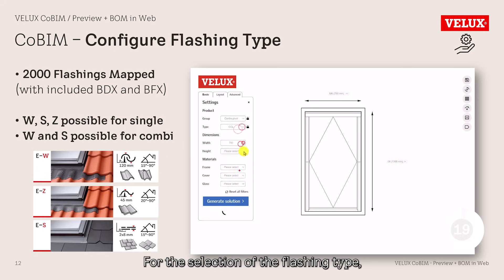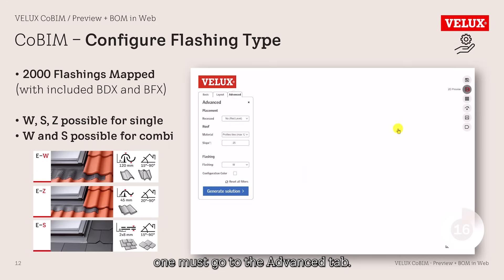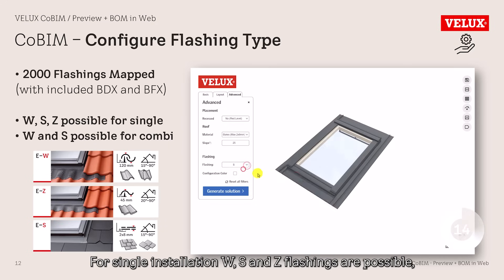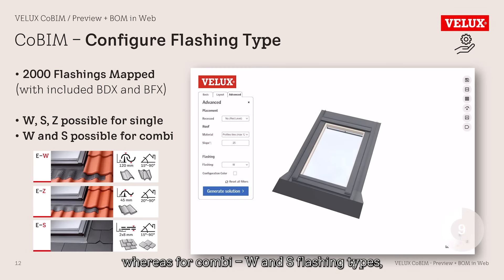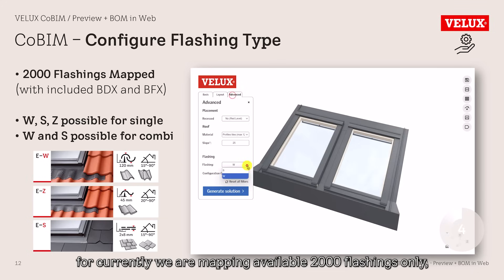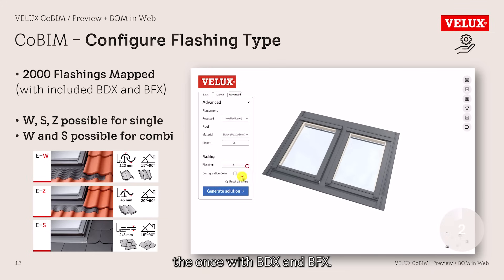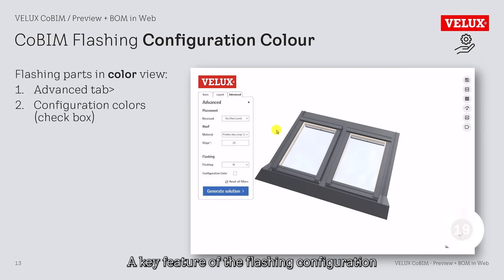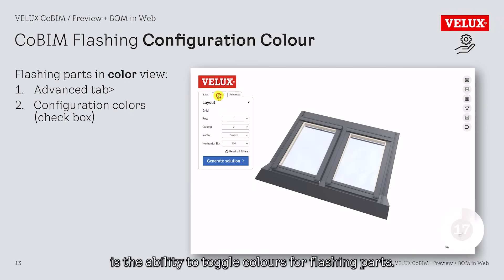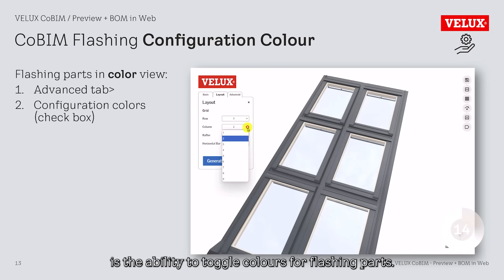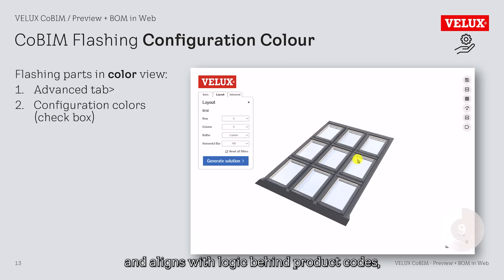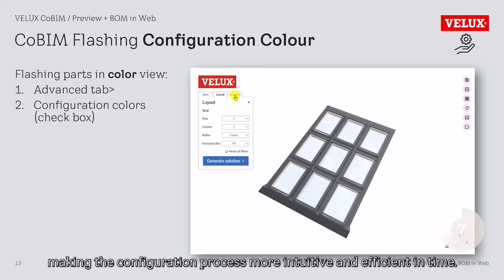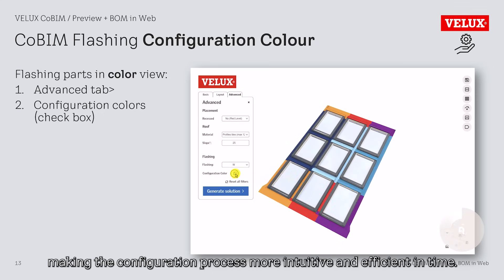For the selection of the flashing type, one must go to the advanced tab. For single installation, W, S, and Z flashings are possible, whereas for combi, W and S flashing types. Currently, we are mapping available 2,000 flashings only — the ones with BDX and BFX. A key feature of the flashing configuration is the ability to toggle colors for flashing parts. This helps users better understand the logic behind the setup and aligns with the logic behind product codes, making the configuration process more intuitive and efficient in time.